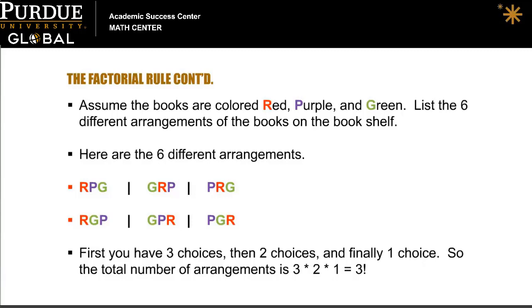Finally, I could choose to put the purple book first, followed by the arrangement red-green, or green-red. So here are the six different arrangements that correspond to our book shelving example.